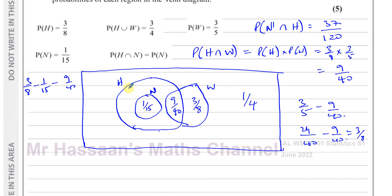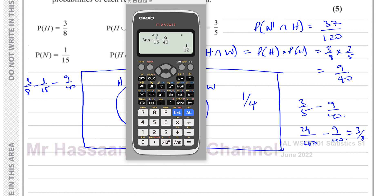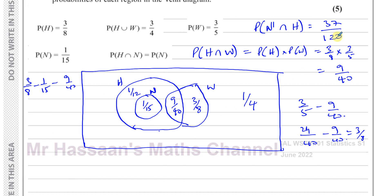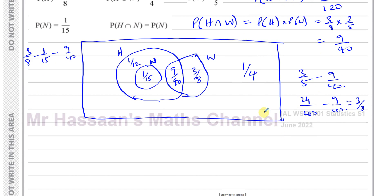So we've now filled in the whole Venn diagram. We can verify: the probability of N complement intersection H was 37 over 120, and taking away the 9 over 40 intersection should give 1 twelfth — which checks out. The complete regions are: N inside H = 1/15, H-W intersection = 9/40, W only = 3/8, H only region = 1/12, and outside = 1/4. There's the answer for this question.